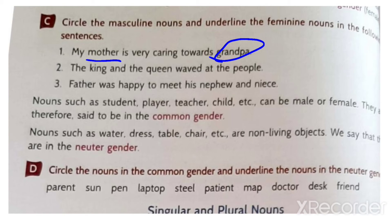King is a masculine noun, so we circle it. Queen is a feminine noun, so we underline it.